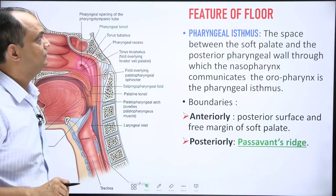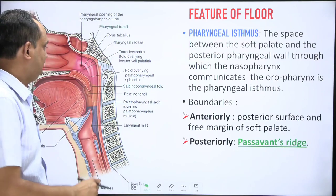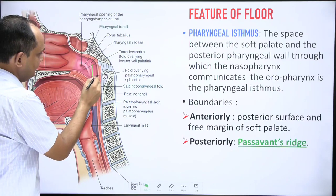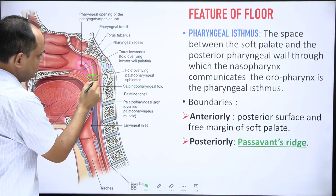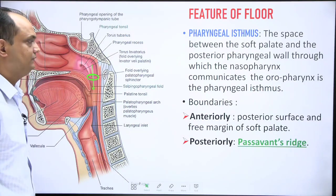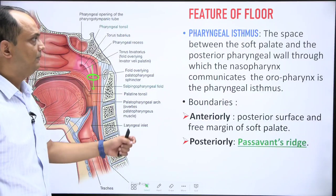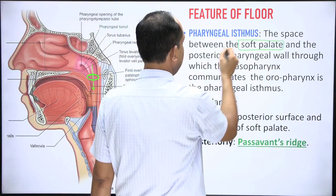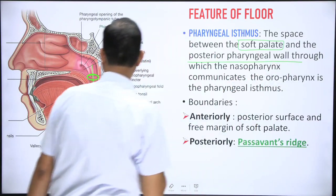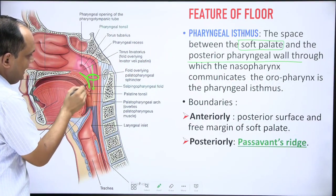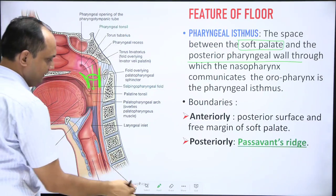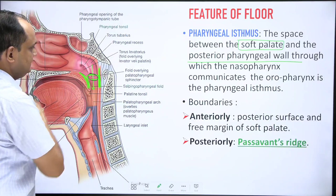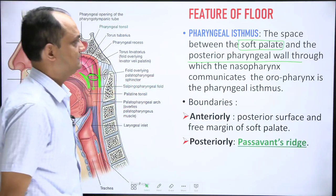The floor of the nasopharynx consists of the communication between the nasopharynx and the oropharynx, which is known as the pharyngeal isthmus. The pharyngeal isthmus is the space between the soft palate and the posterior pharyngeal wall.